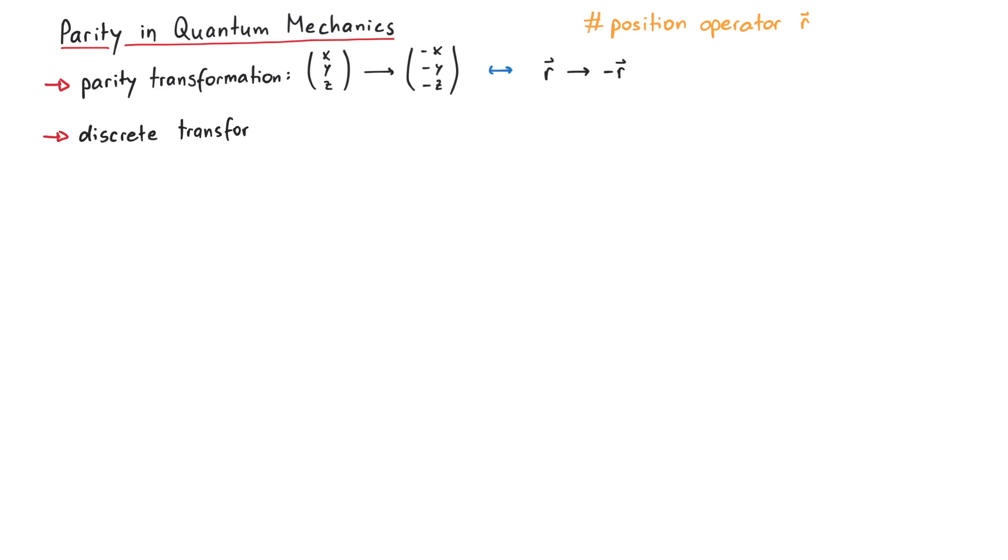This is an example of a discrete transformation. A discrete transformation is something you can either do or don't do. You cannot apply a parity transformation just a little bit.